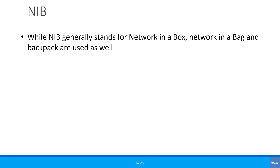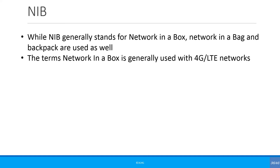NIB generally stands for Network in a Box, though Network in a Bag or Backpack are used as well. The term is generally used with 4G or LTE networks, but there is nothing stopping you from using this term for 2G or 3G networks. This is an industry-defined term, though there is something similar defined in 3GPP that we will look at later.